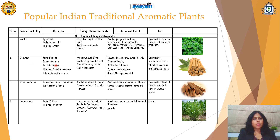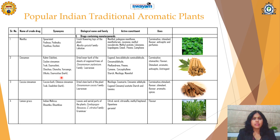Next is Cinnamon, which is called as Kali Mirch Dalcini, Ceylon Cinnamon, or in Ayurveda it is called as Twaak. It is a dried inner bark of the plant Cinnamomum zeylanicum, Family Lauraceae. It also contains monoterpenoids: eugenol, cinnamaldehyde, phellandrene, and other ingredients. It is carminative, stomachic, flavorant, stimulant, aromatic, antiseptic, and astringent. It is also found to be very good antiviral and antimicrobial.